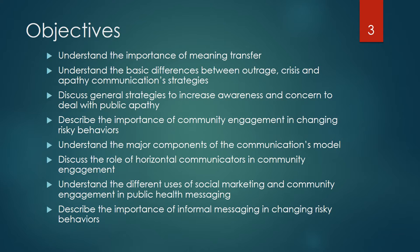Objectives include: understand the importance of meaning transfer; understand the basic differences between outrage, crisis, and apathy communication strategies; discuss general strategies to increase awareness and concern to deal with public apathy; describe the importance of community engagement in changing risky behaviors; understand the major components of the communications model; discuss the role of horizontal communicators in community engagement; understand the different uses of social marketing and community engagement in public health messaging; and describe the importance of informal messaging in changing risky behaviors.